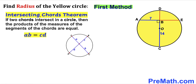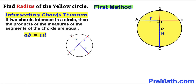Let's recall the intersecting chords theorem. According to this theorem, if two chords intersect in a circle, then the product of the measures of the segments of the chords are equal. The product A times B equals C times D, and we label the four segments accordingly.